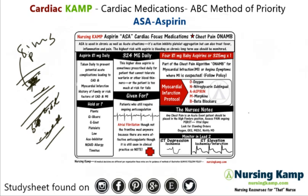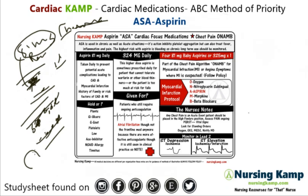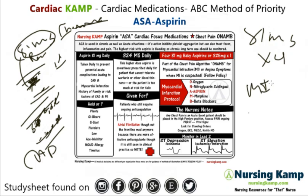They recommend giving 81 milligrams daily, which makes this a chronic medication. It's given for CAD — coronary artery disease. It's also given as 81 milligrams times four for an MI, myocardial infarction.